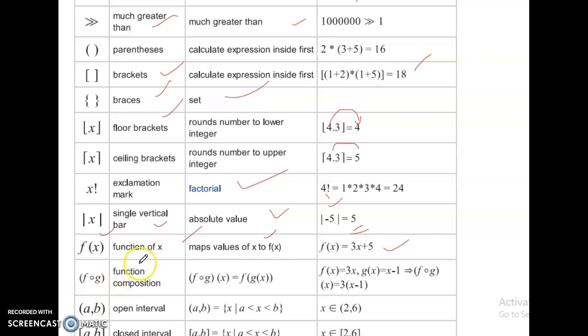This is function composition. Function composition g of x equal to f of gx. f of x is equal to, gx equal to, g of x minus 1 implies f function composition g of x is equal to 3 of x minus 1.